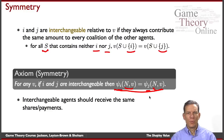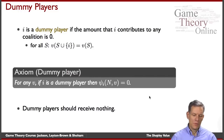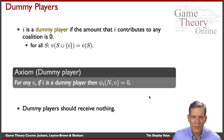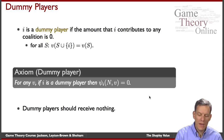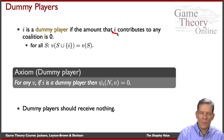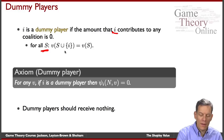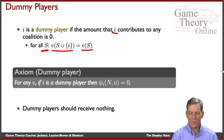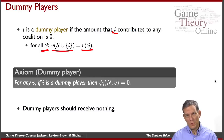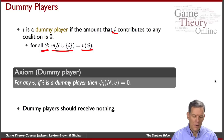This is a fairly uncontroversial axiom — it captures a basic notion of fairness that if individuals are completely equivalent they should get equivalent payments. The next axiom concerns dummy players. The idea is a situation where you add a person i to a coalition and they add absolutely nothing — no matter what coalition S we look at, if we add i to S we get the same value as without that individual. The person is completely worthless no matter what coalition we're looking at.